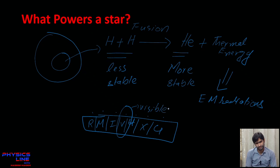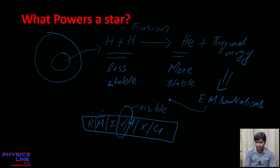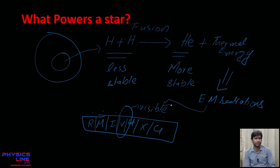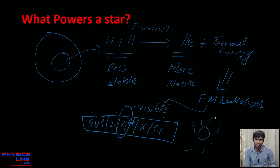Only the visible region of the electromagnetic spectrum is visible to us. We see a star glowing in the night sky because nuclear fusion is occurring in that star, and that nuclear fusion is emitting electromagnetic radiation that lies in the visible region — that is why stars glow.